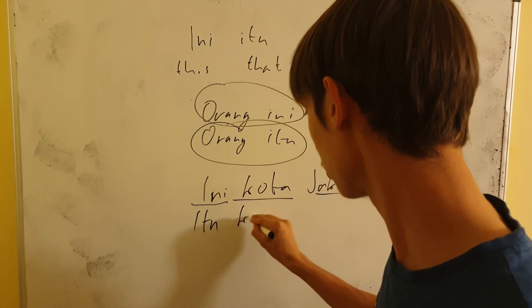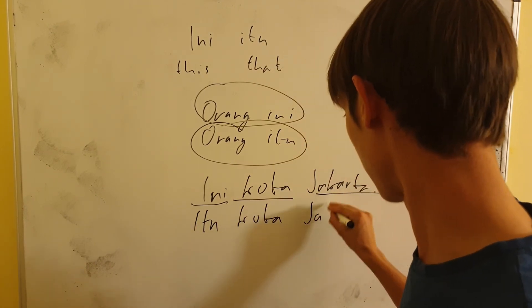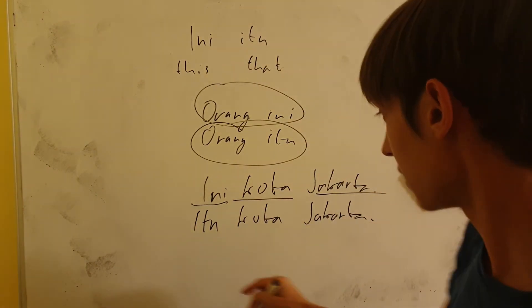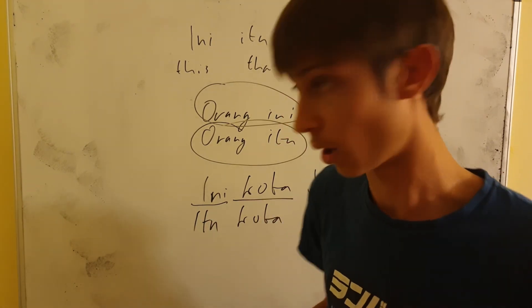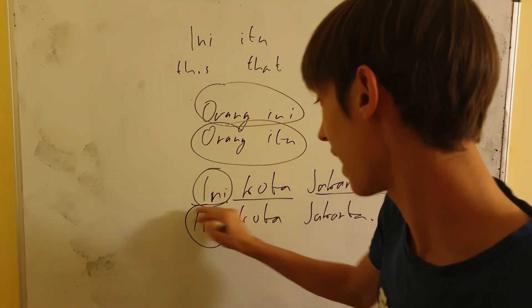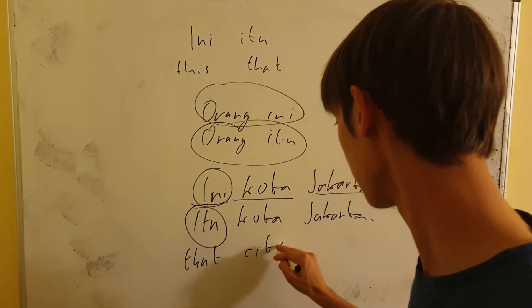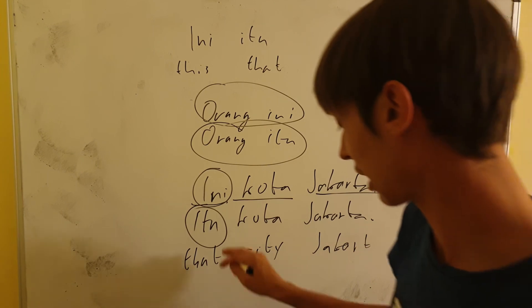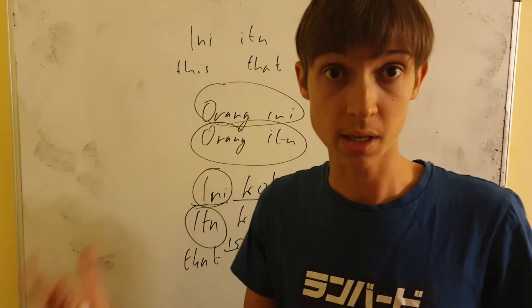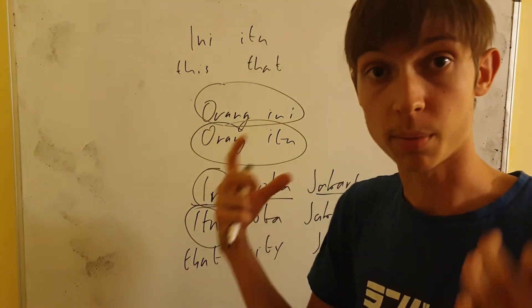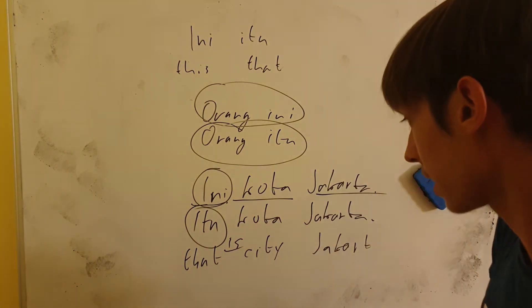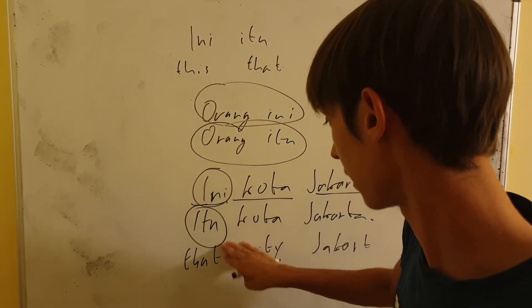Or you can say ITU KOTA JAKARTA, and that means that is CITY JAKARTA. Well, this is this and this is that. And you see that CITY JAKARTA, and it means that is CITY JAKARTA. But we don't have any IS here. We don't have any connection with the word, using the word BE in here. It's just without that. You don't use such stuffs really in Indonesian. Thank you.